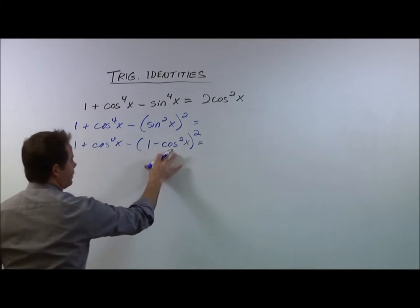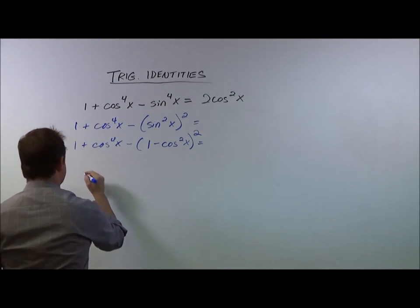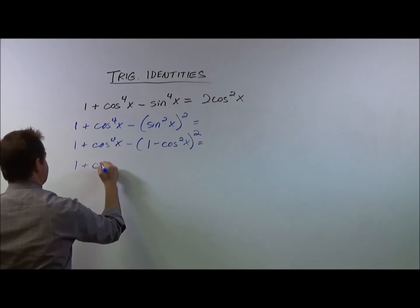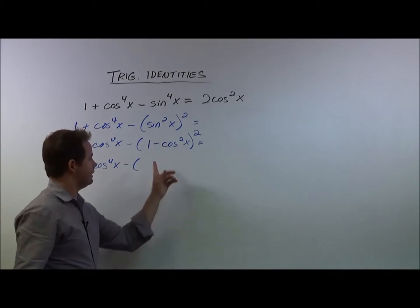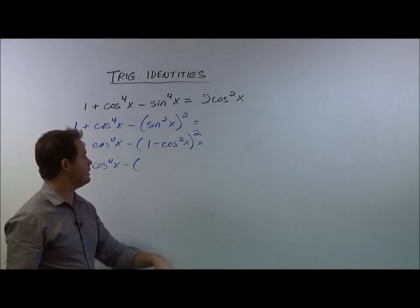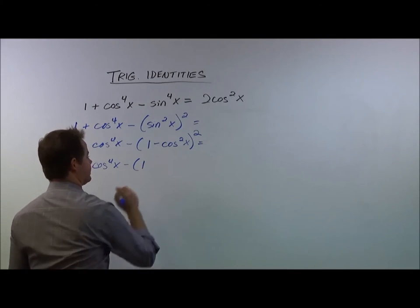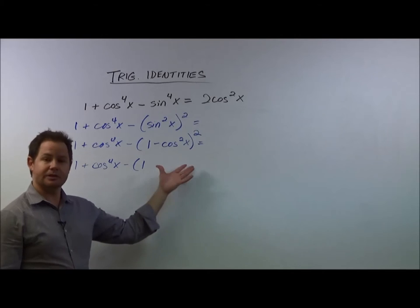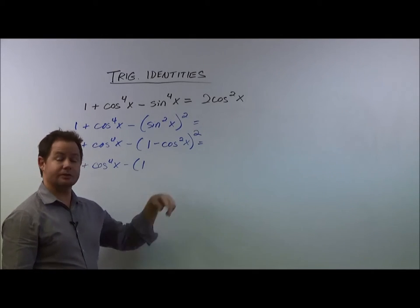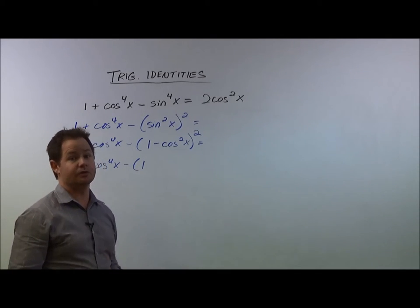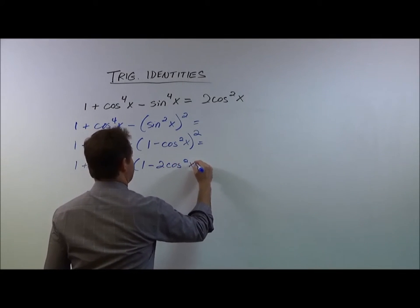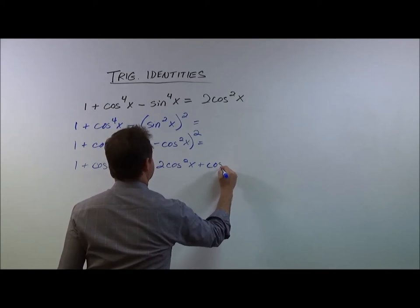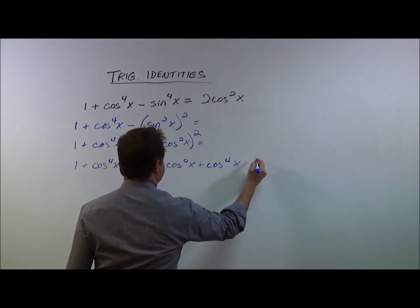So we have that quantity squared, and now we're going to actually do a little foiling. So when you have a binomial squared, you multiply your first terms. 1 times 1 is 1. Your outside terms would give you a minus cosine squared x, and your inside terms would also give you a minus cosine squared x. So that'll end up being minus 2 cosine squared of x, and plus cosine to the fourth of x.